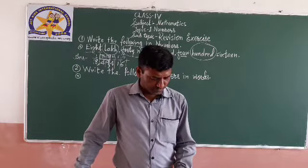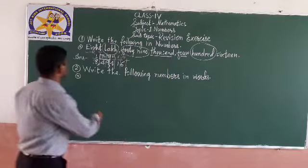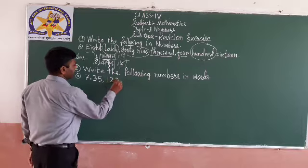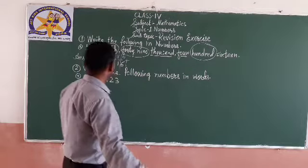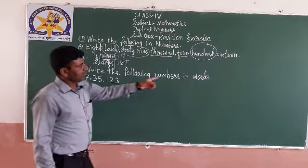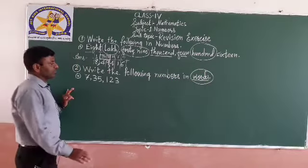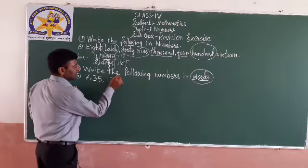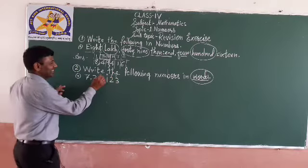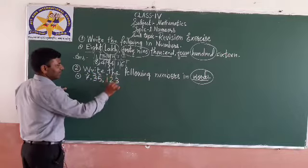I will solve B. The number is 7,35,123. We will have to write it in words. See how to write — very simple. First write the place values: ones place, tens place, hundreds place, thousands place, ten-thousands place, lakhs place. These are the place values.